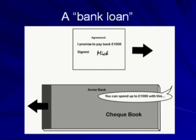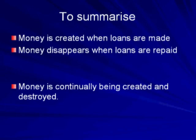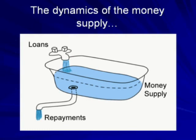And also, just like any other IOU, it will expire when the loan is repaid. So to summarise: money is created when loans are made, and disappears when loans are repaid. Money is continually being created and destroyed. We can visualise this dynamic by imagining a bathtub with water flowing in from a tap and out through the plughole. The flow into the bath from the tap corresponds to new loans being made, while the water flowing out through the plughole corresponds to loans being repaid. So the total amount of money circulating in the economy depends critically on the relative rates of flow into and out of the system.